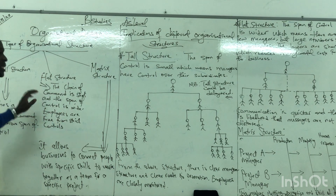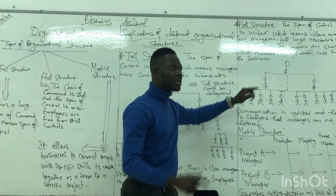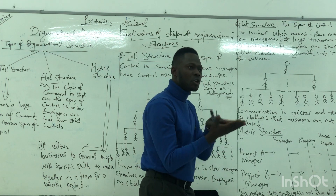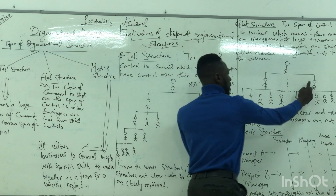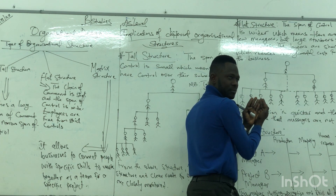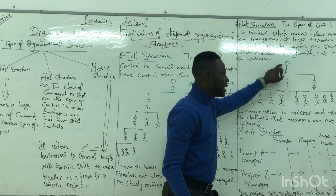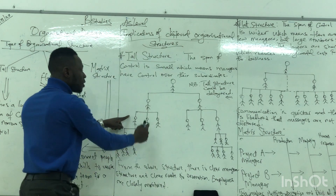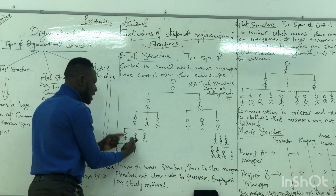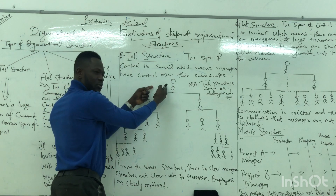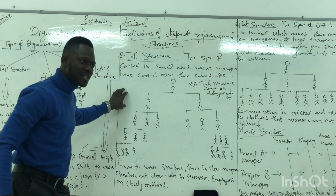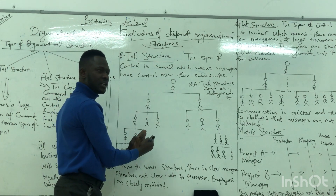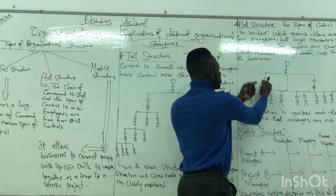We call it a flat structure because the chain of command is short, but it has a wider span of control. The level of authority has shorter layers, meaning the level of authority within this organization is short. Just two managers can have a lot of subordinates under them. So even the director can directly link with the subordinates.